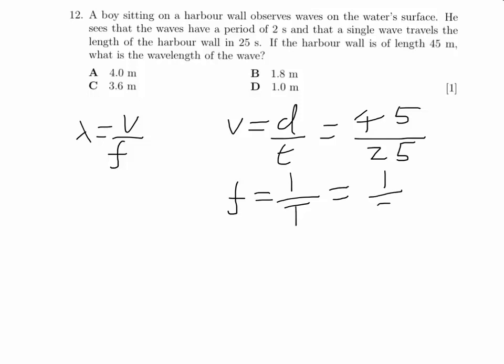We can find frequency by doing one divided by the time period. Time period we're told in the question is two seconds. So that gives us a frequency of half a hertz, putting those numbers into our wave equation now.